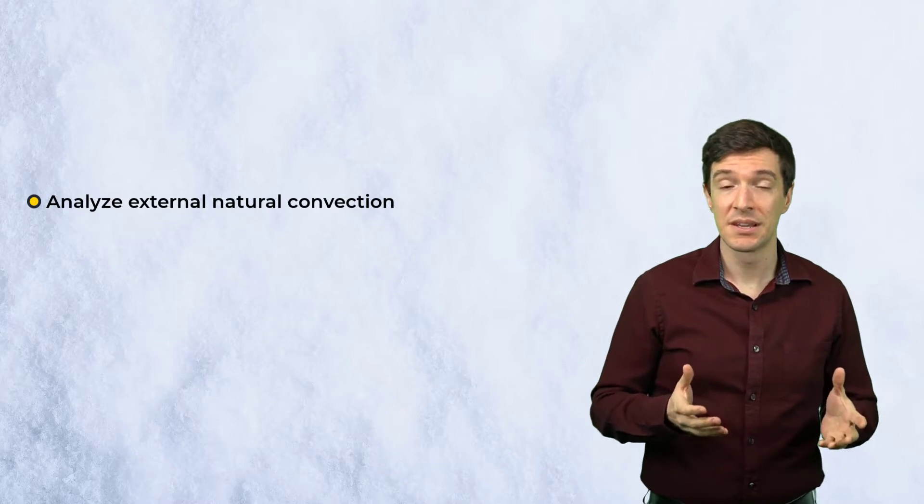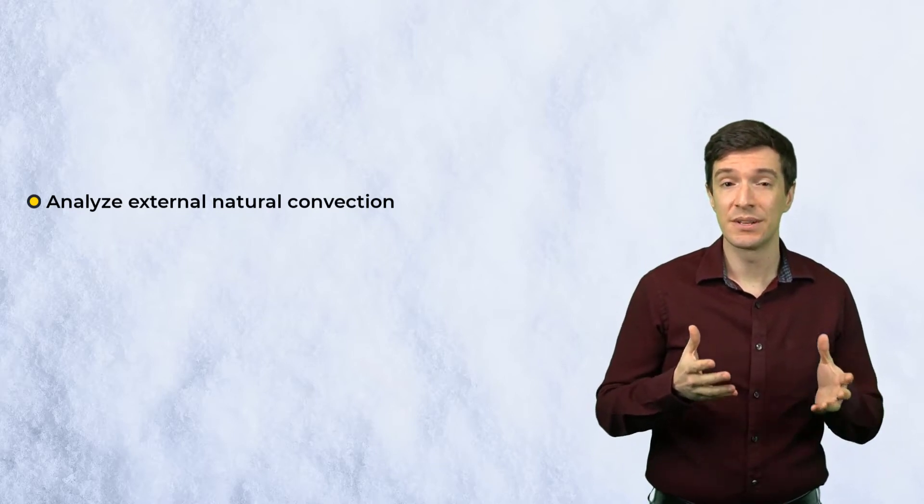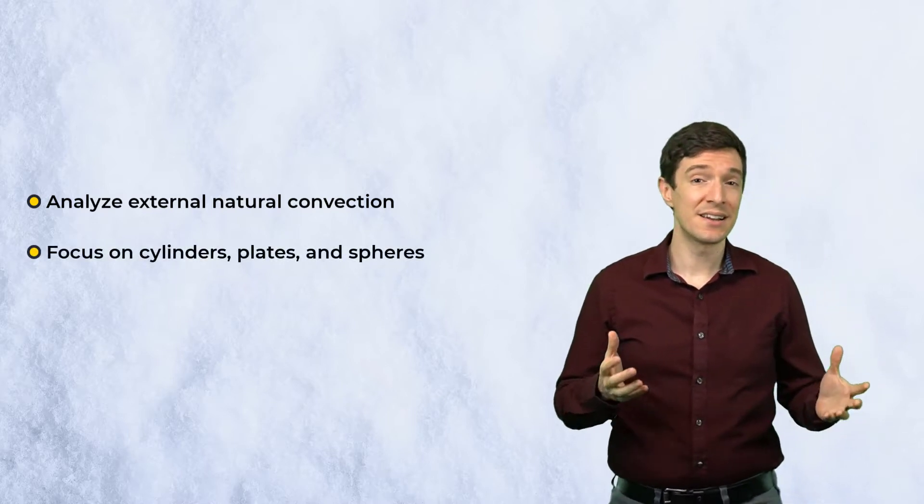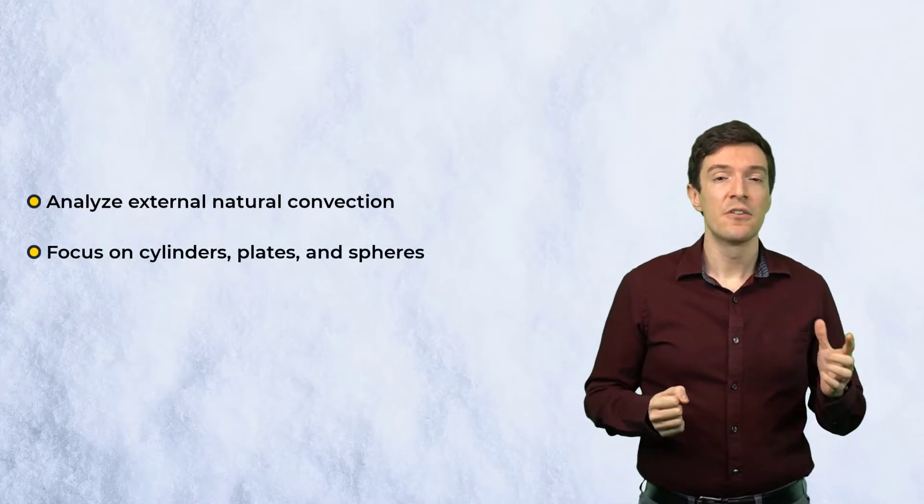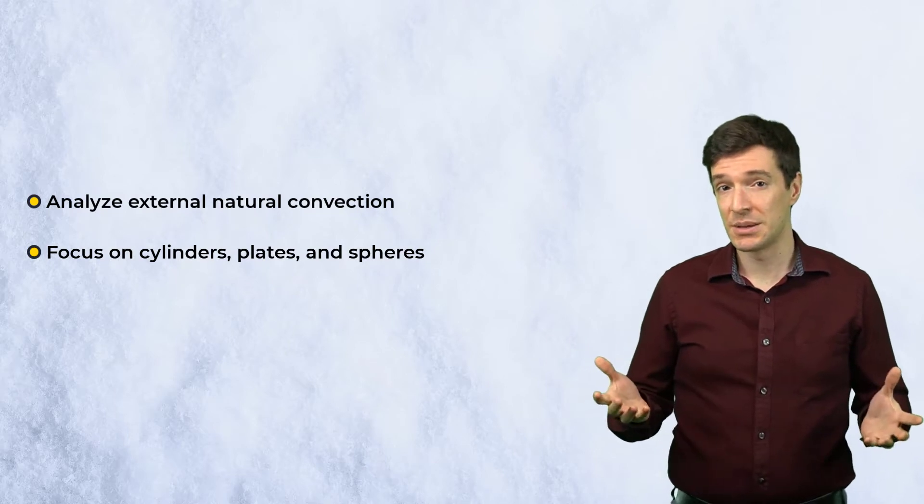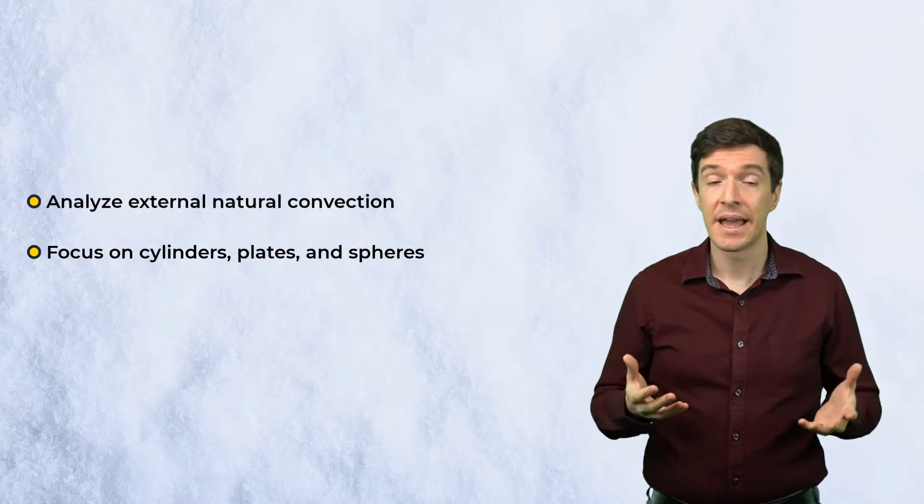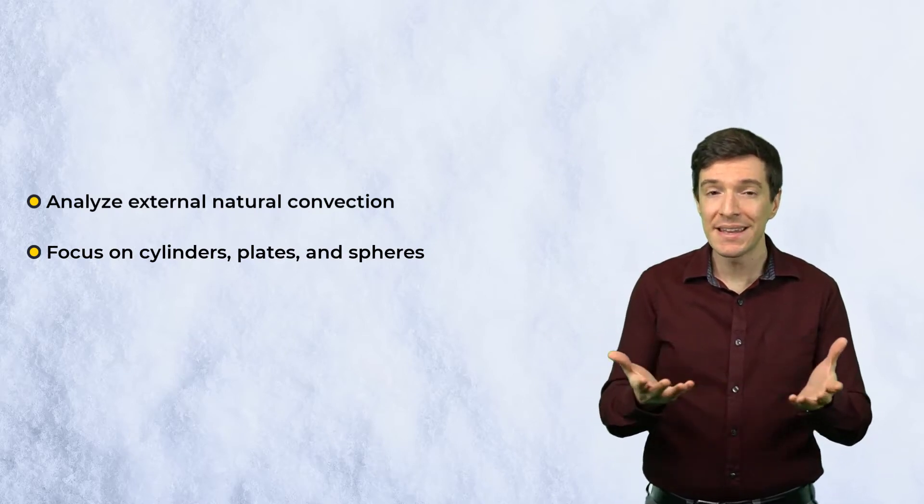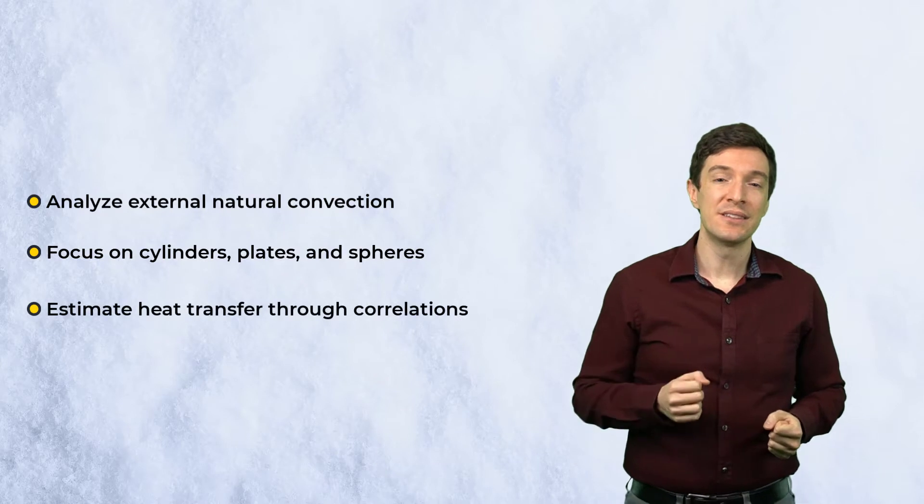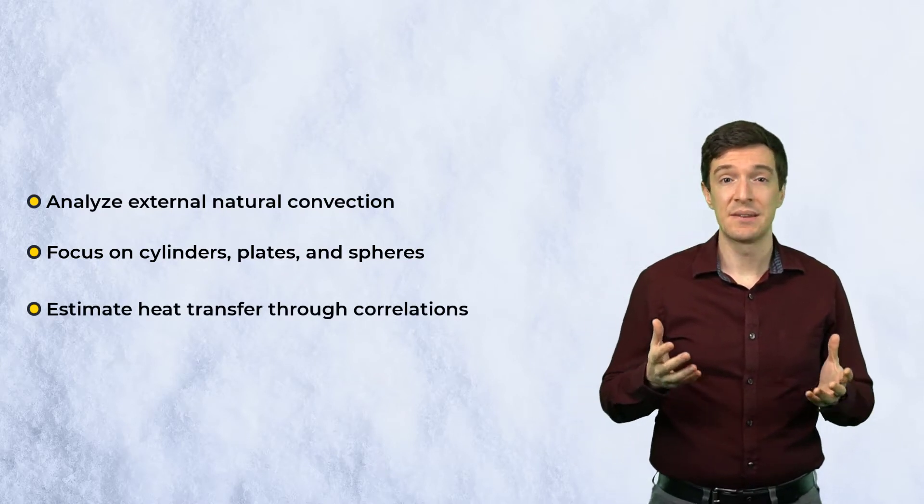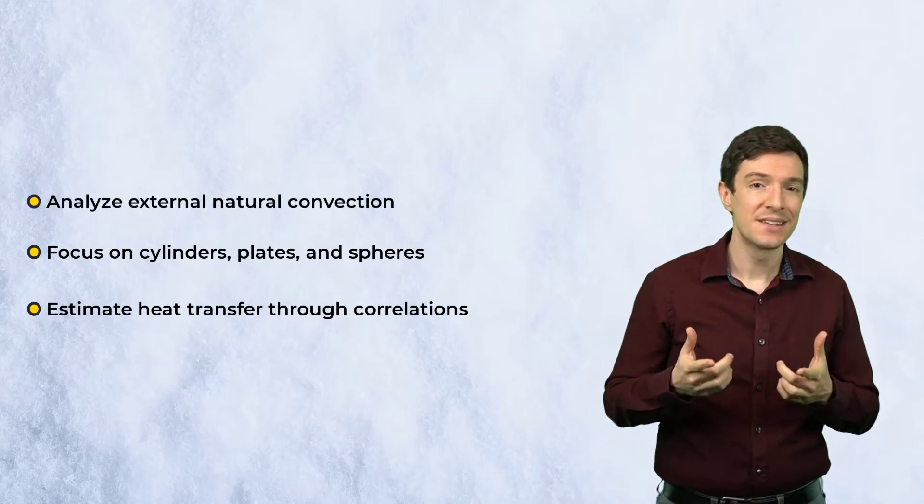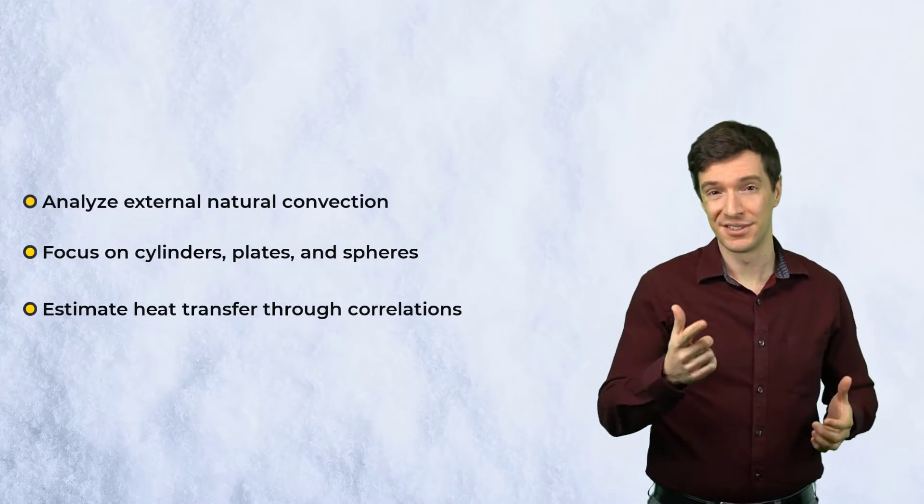In this lesson, we will learn how to analyze systems exchanging heat with a still fluid surrounding them. We will focus on external natural convection for different canonical shapes such as cylinders, plates, and spheres that can be representative of many everyday objects. We will introduce correlations that can be used to estimate the average Nusselt number, and thus the heat transfer for the system.